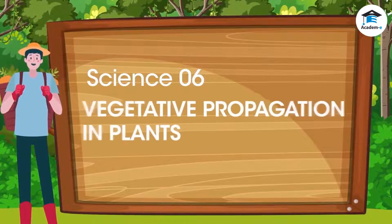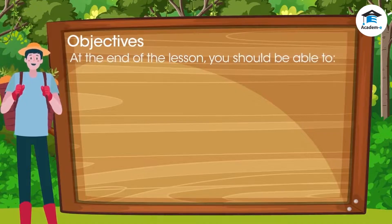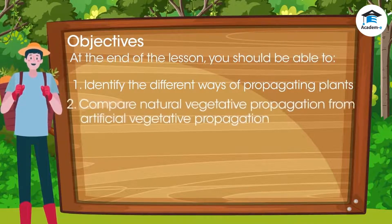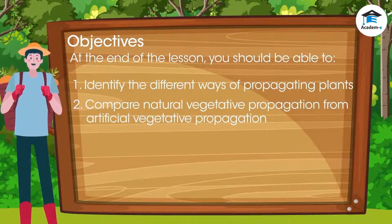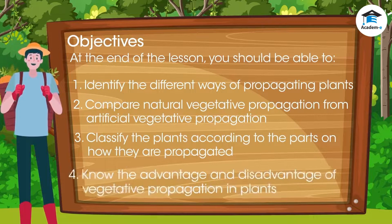Science 6: Vegetative Propagation in Plants. Objectives: At the end of the lesson, you should be able to identify the different ways of propagating plants, compare natural vegetative propagation from artificial vegetative propagation, and classify the plants according to the parts on how they are propagated.